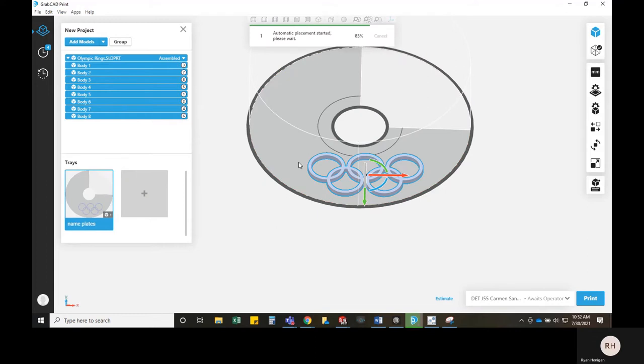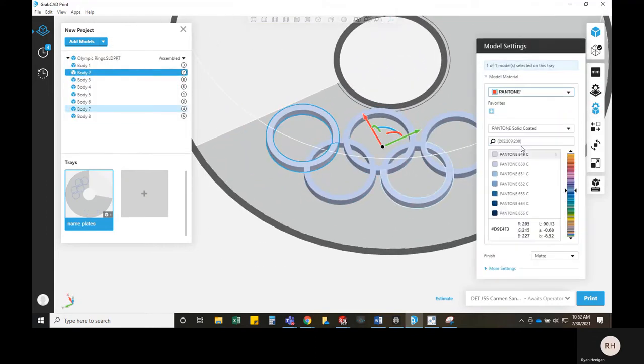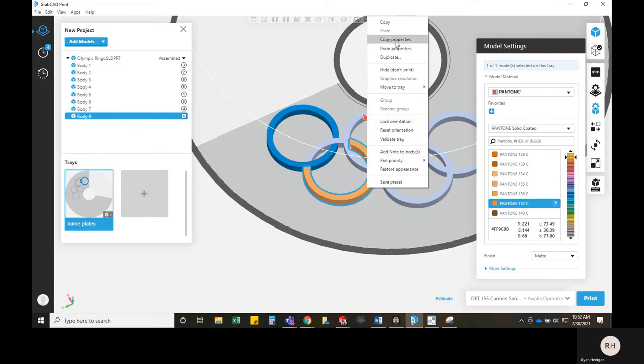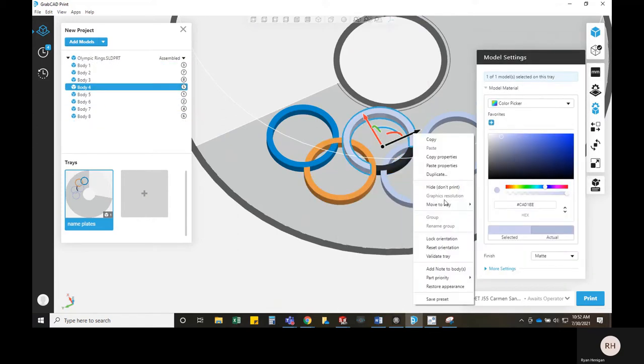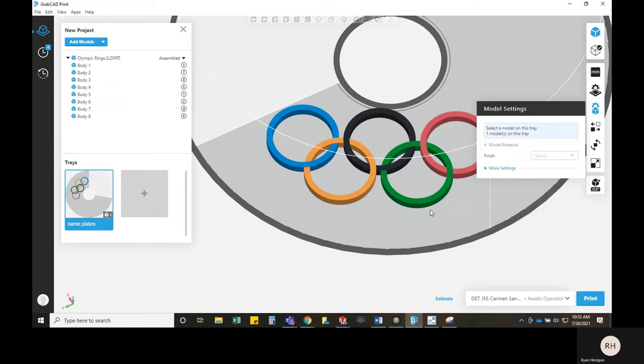We'll do auto-orient and then start selecting Pantone colors. As you can see, the O-rings do have separate bodies. This is what you need in order to select the colors. You can't just bring it in all as one, you have to be able to have different bodies. As you can see, he's selecting the Pantone colors.